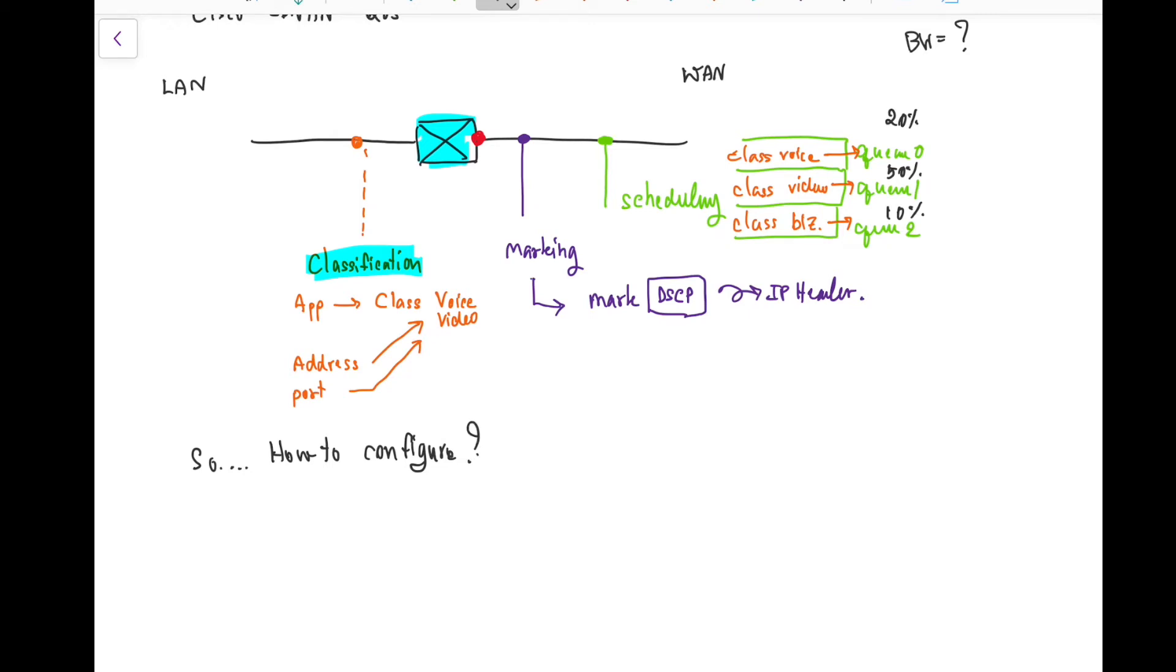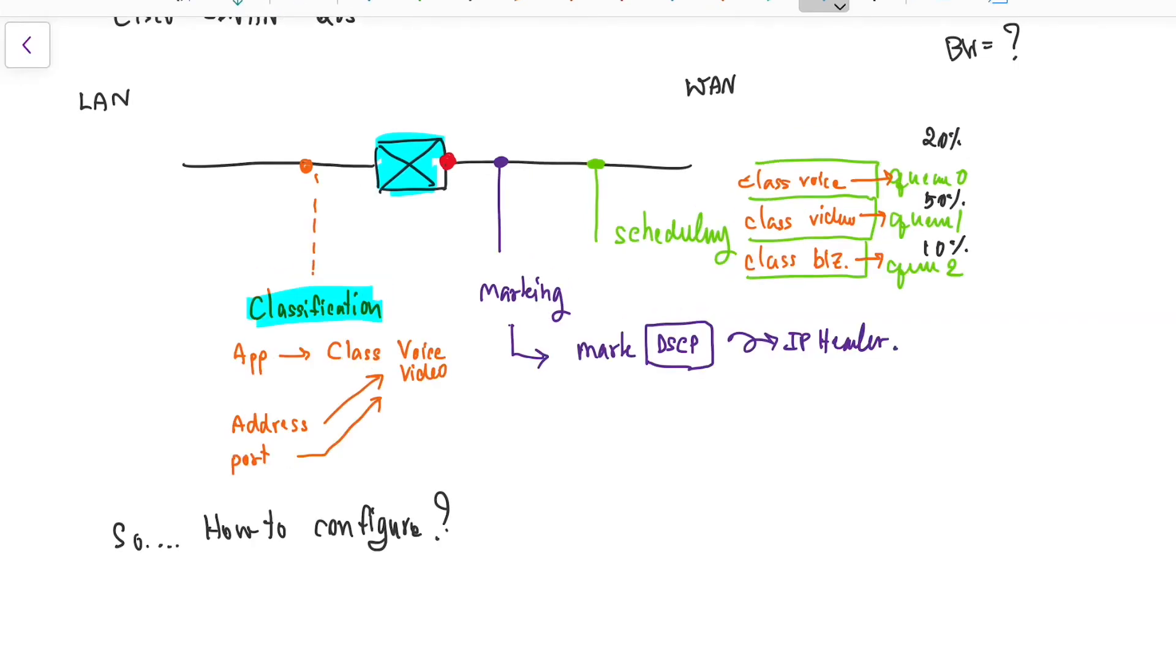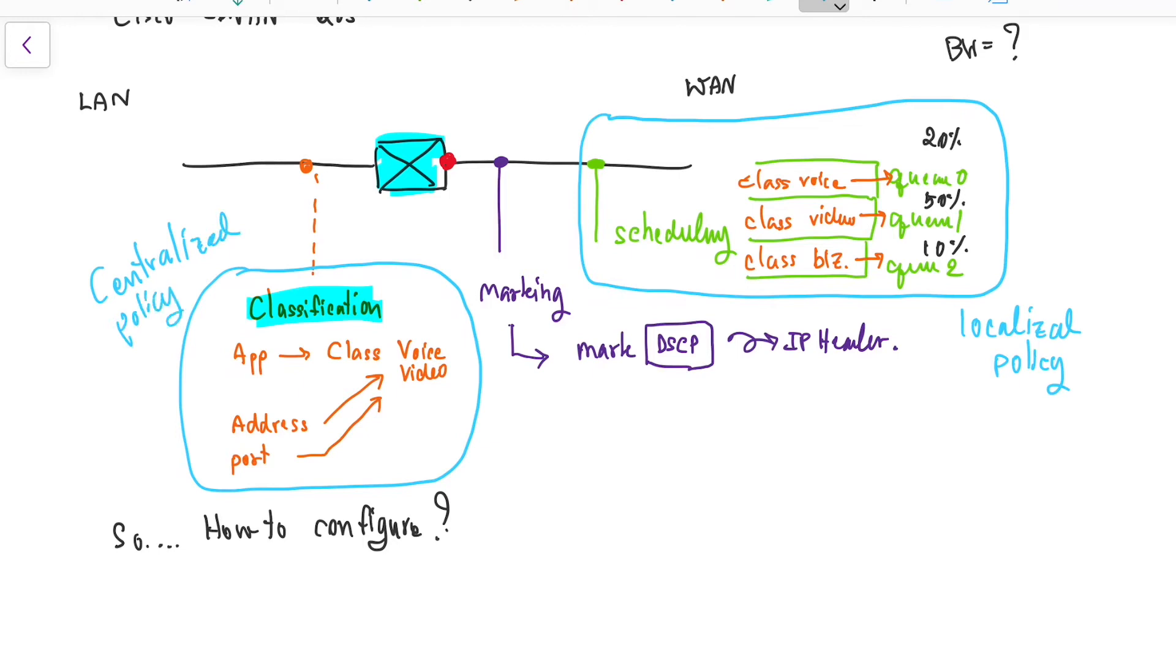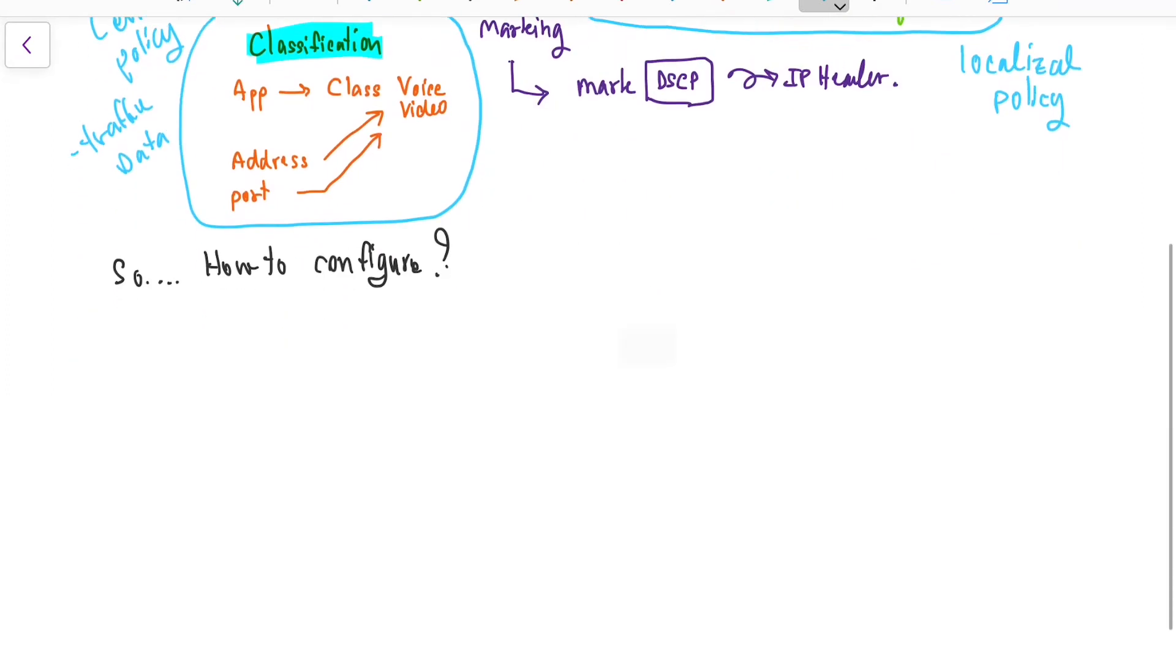So now, how do we configure the SD-WAN QoS? Let's take a look. On the WAN side, we can use the localized policies to create the scheduling on the interface of the router. We can use the centralized policies to do the classification, so we can map the traffic or the applications to the class. And finally, we're going to do the shaping rate on the WAN interface of the router because we need to calculate the bandwidth percentage on the scheduling part. So let's summarize how to configure the QoS.